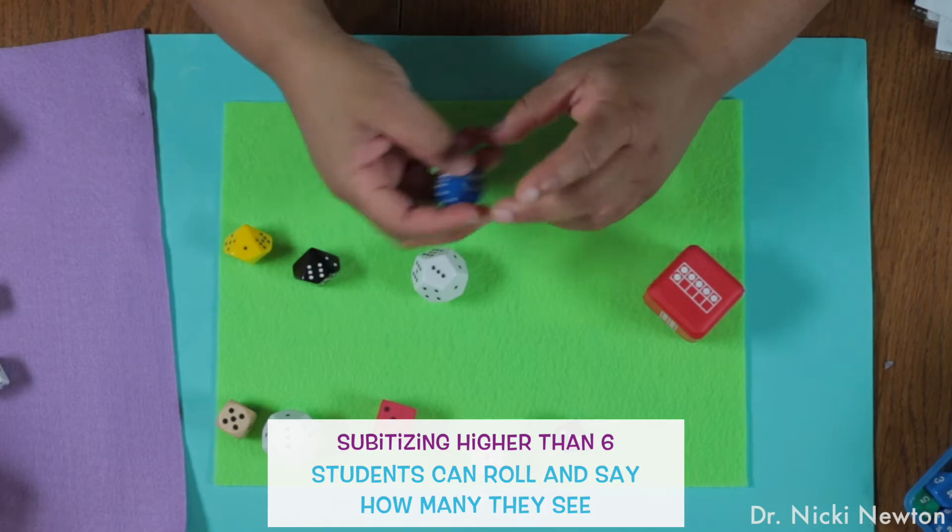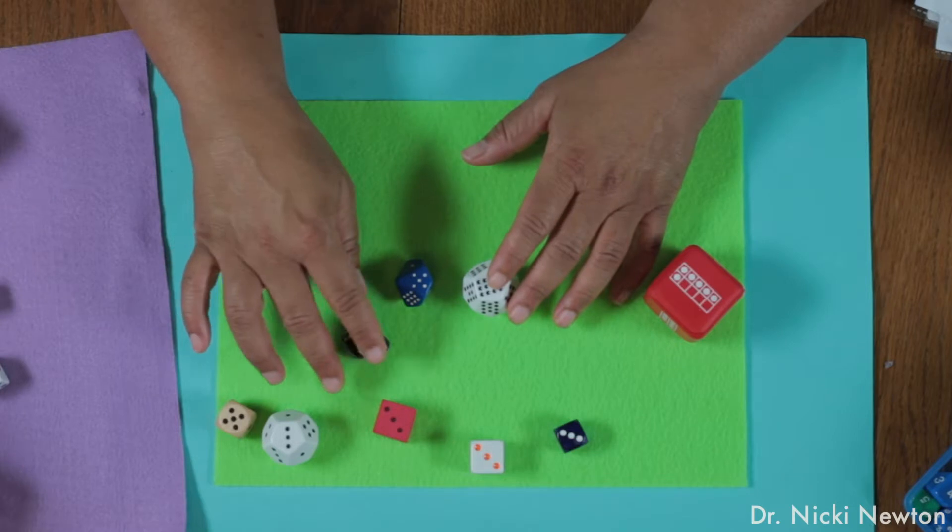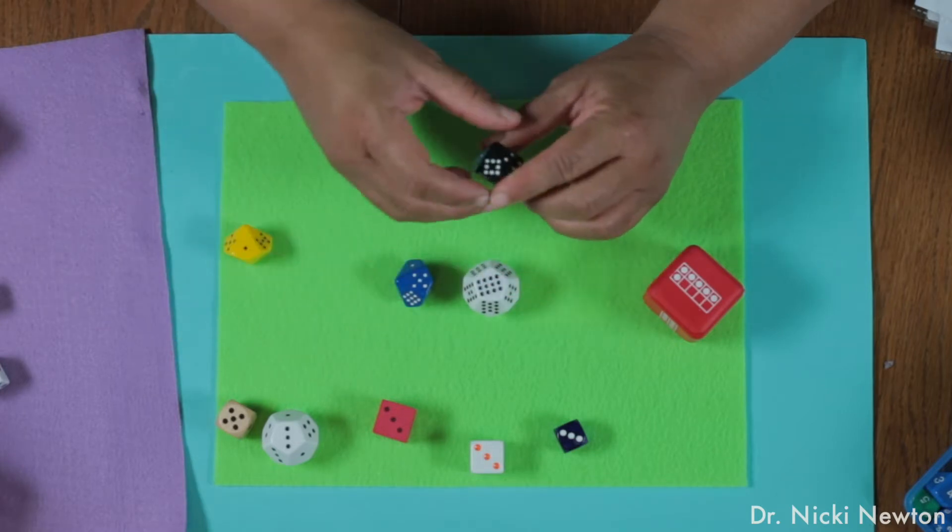The kids roll and they say what they see. Here they can roll and get either small numbers or larger numbers, and they can start looking at patterns to identify what they see.